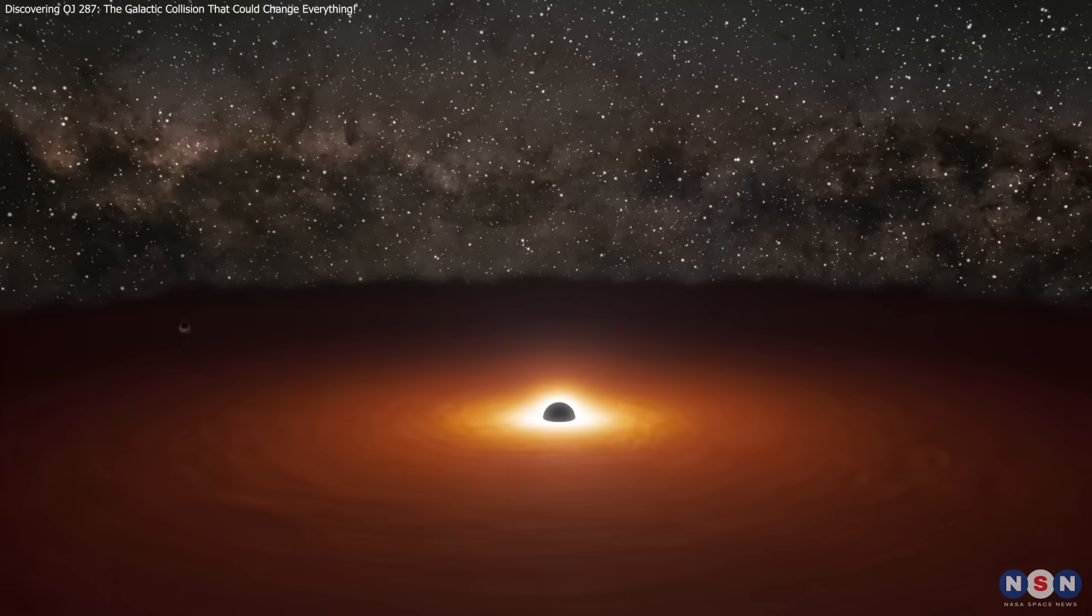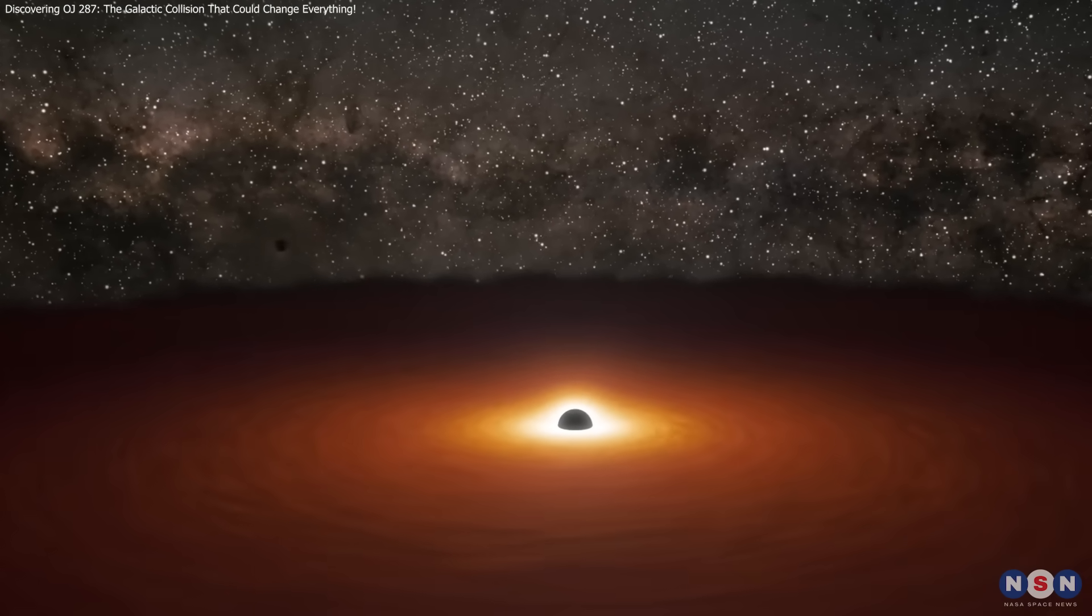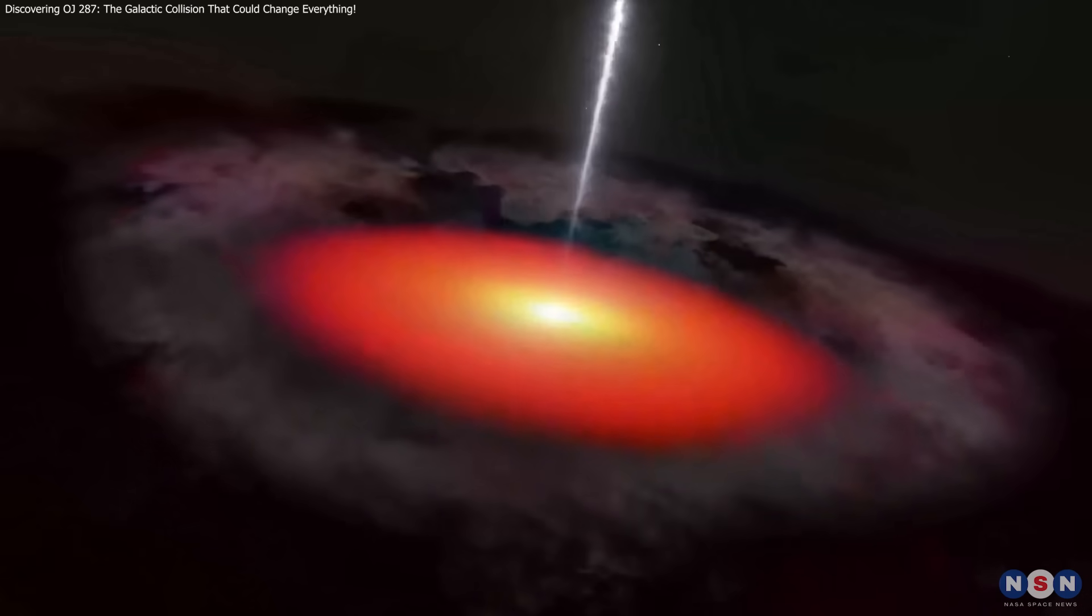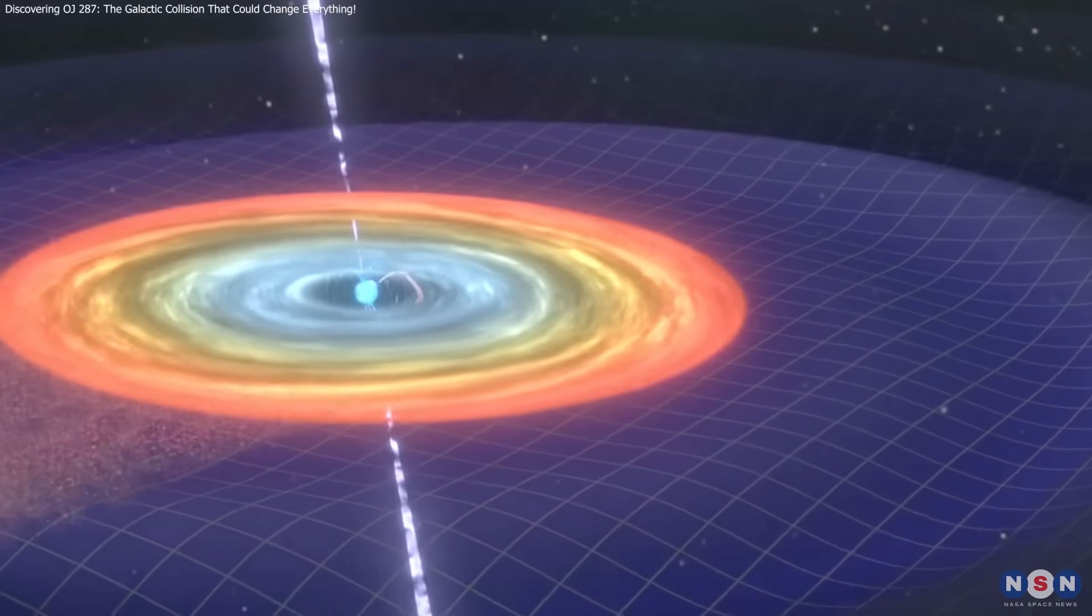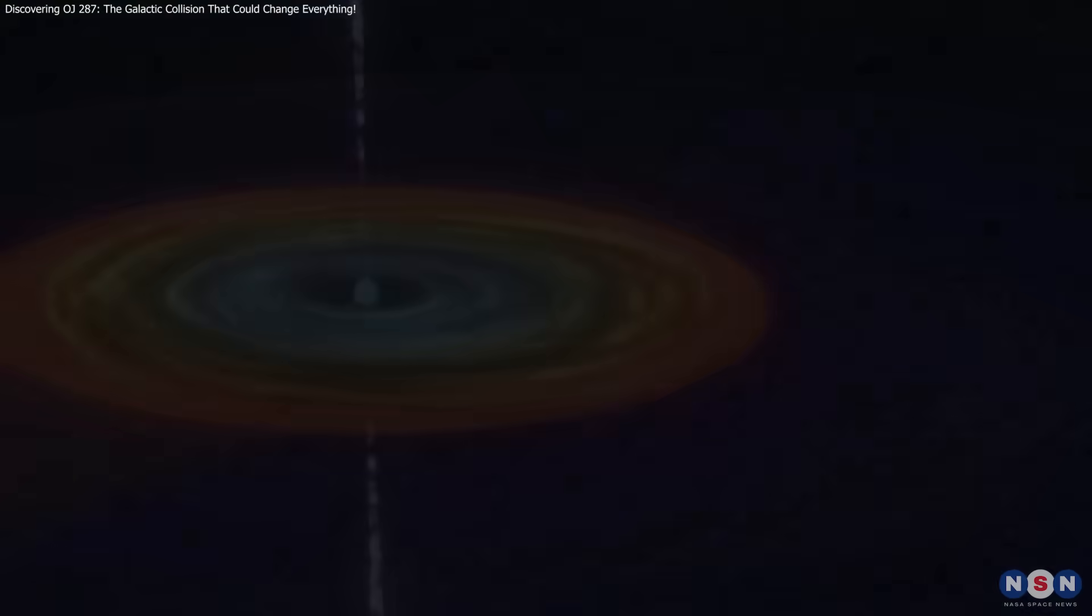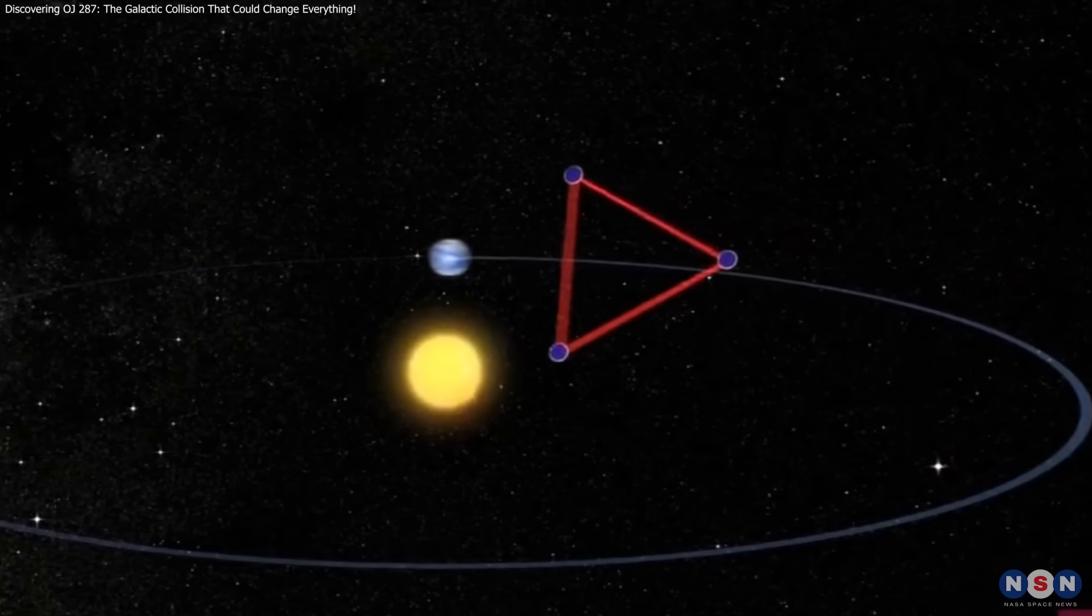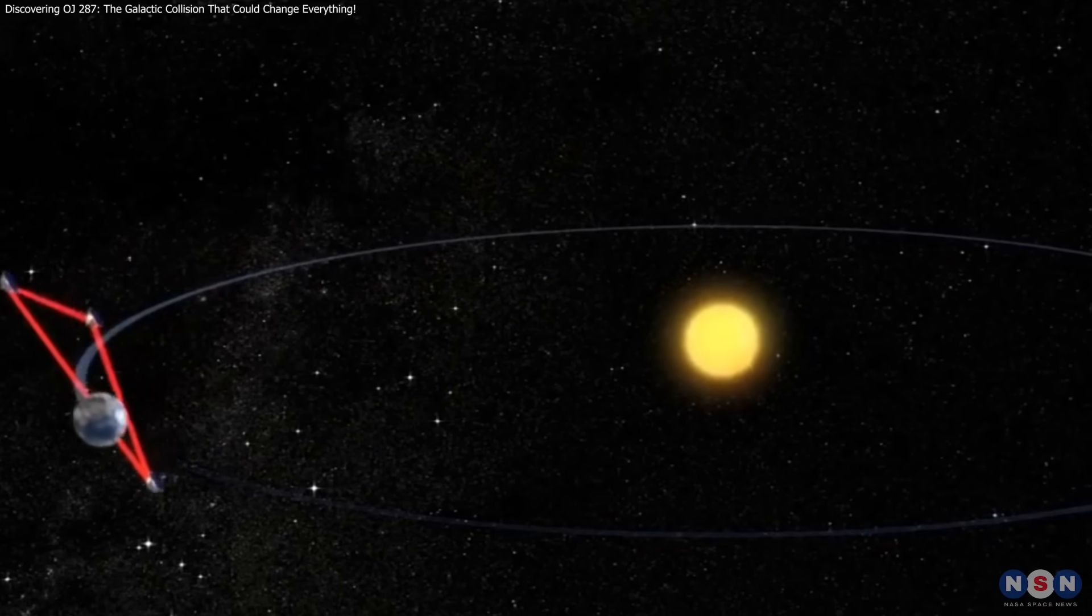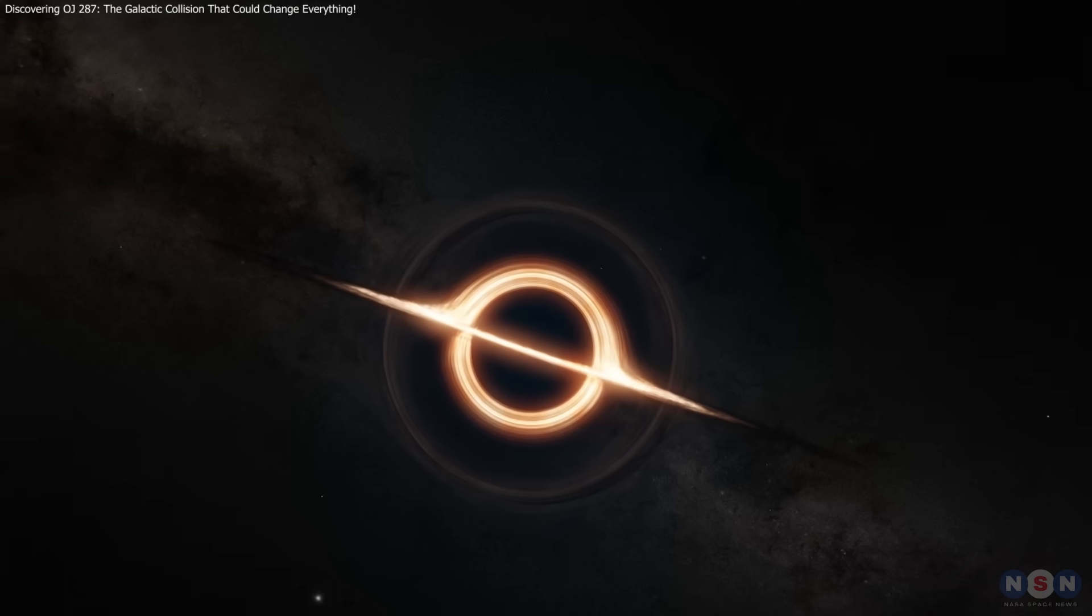OJ 287's binary black hole system is a rare lab for studying jets, outbursts, and gravitational waves. With upcoming missions like LISA, we're closer than ever to unlocking its secrets, so let's keep watching.